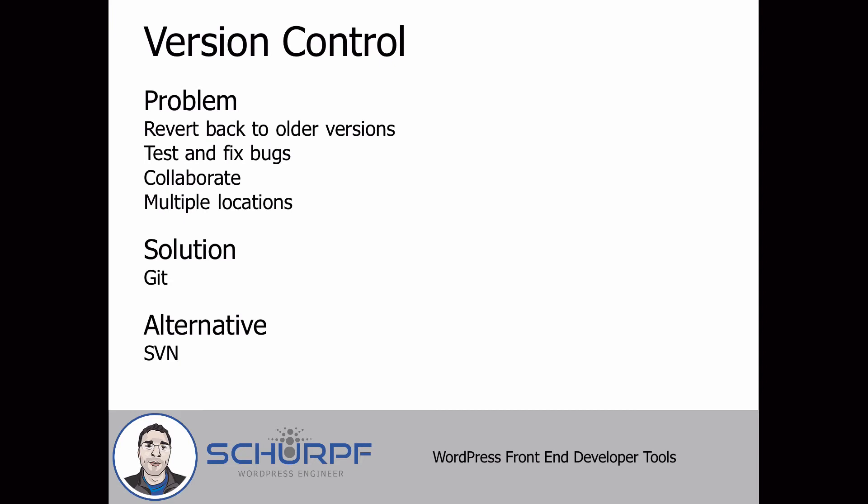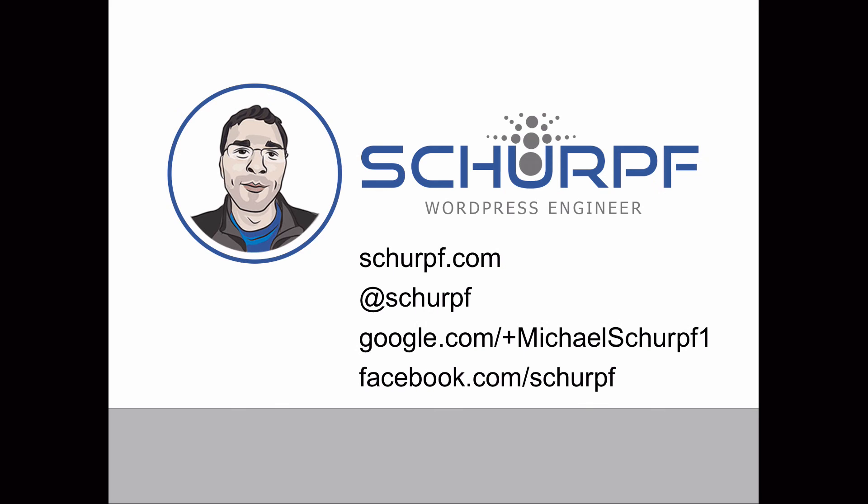Once you start using version control, it gets very natural and it isn't as scary as it looks at first. The solution I use is Git — I really like it. With Git you get access to GitHub, Bitbucket, and similar platforms for pushing, pulling, and merging code. The alternative would be Subversion, which is essentially what WordPress uses, but I think Git is far superior.